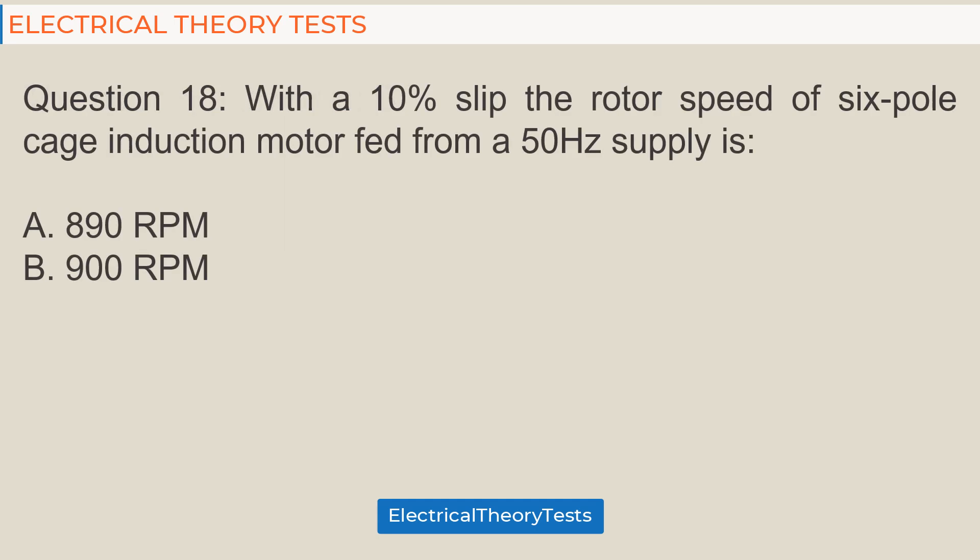Question 18: With a 10% slip the rotor speed of 6-pole cage induction motor fed from a 50 Hz supply is: A. 890 rpm, B. 900 rpm.